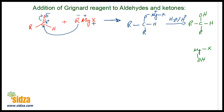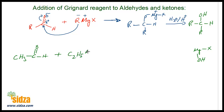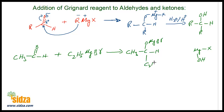So when you take an aldehyde and react with a Grignard's reagent, you get an addition product, and this addition product upon further hydrolysis produces the alcohol. For example, if you take CH₃CHO (acetaldehyde) and react with ethyl magnesium bromide, C₂H₅MgBr, you get CH₃-C(OmgBr)(C₂H₅)-H as the addition product.